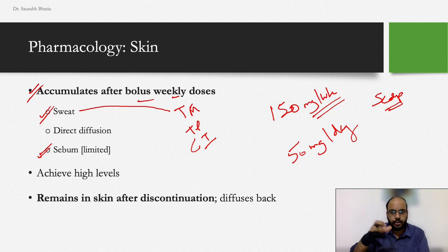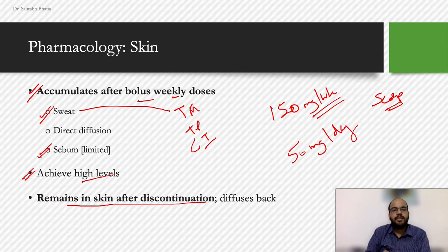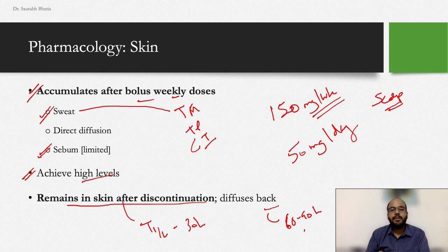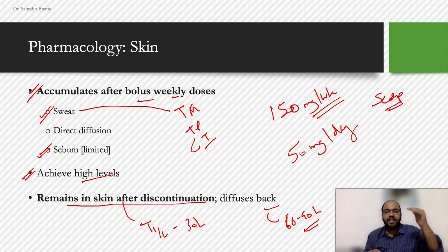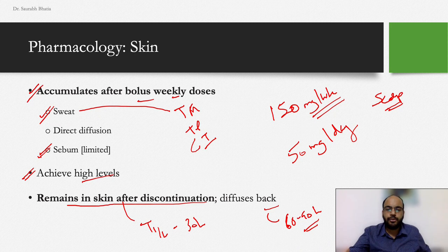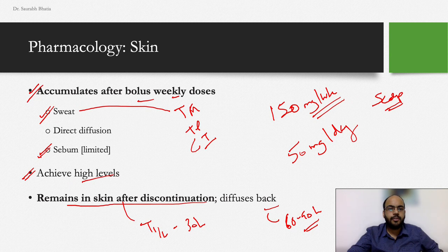High levels of fluconazole are achieved in skin, and they remain after discontinuation. Recall that the serum half-life is about 30 hours, while the skin half-life is 60–90 hours — roughly double to triple. After blood levels decrease, the drug diffuses back from skin to blood vessels, essentially acting as a source of fluconazole after treatment is stopped.